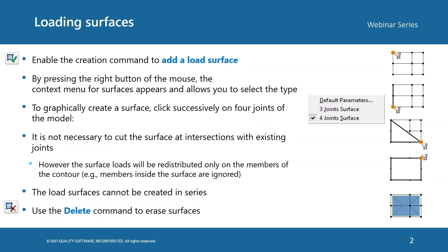The user can create loading surfaces using the command Add a Load Surface on the Addition toolbar. After activating this command by pressing the right button on the mouse, the context menu for surfaces will appear and allows you to select the type of surfaces. The software allows you to create two types of loading surfaces: a 3-joint surface and a 4-joint surface.